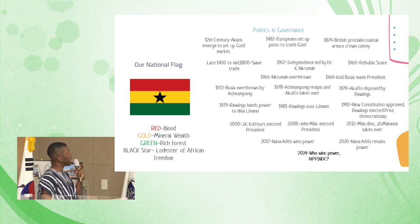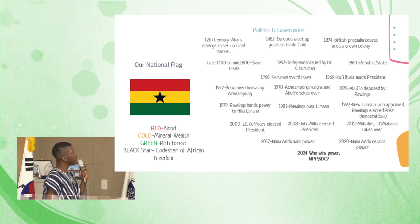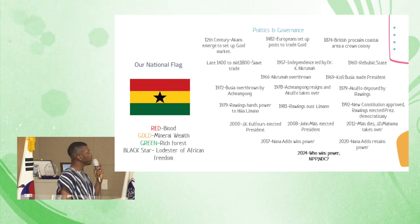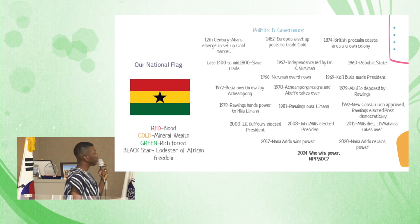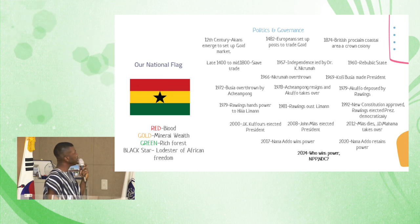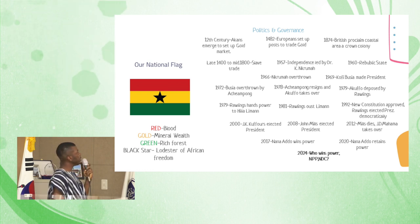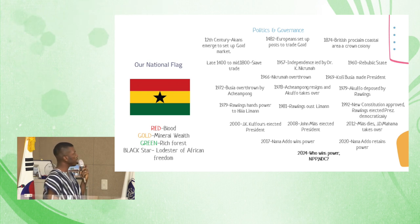In 1482, the European sector pushed to trade gold. In 1874, the British proclaimed the coastal area as a crown colony. In the late 1900s to mid-1900s, the slave trade began.